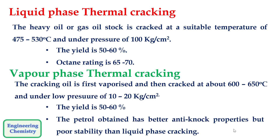In vapor phase thermal cracking, the pressure is lowered to around 10 to 20 kg/cm². When the pressure is lowered, all the liquid gets converted into vapor and the process is carried out at around 600 to 650°C. The yield is around 50 to 60%, but the petrol obtained has better anti-knocking properties though poor stability compared to liquid phase cracking.